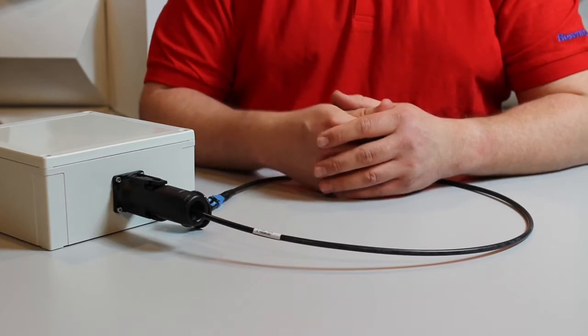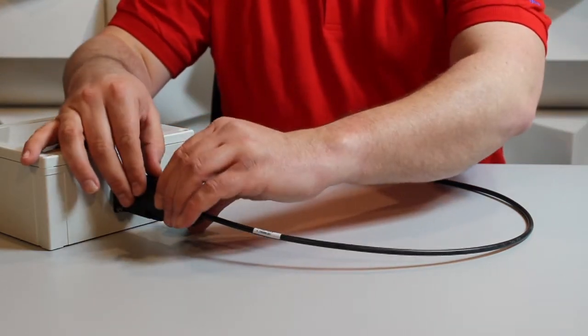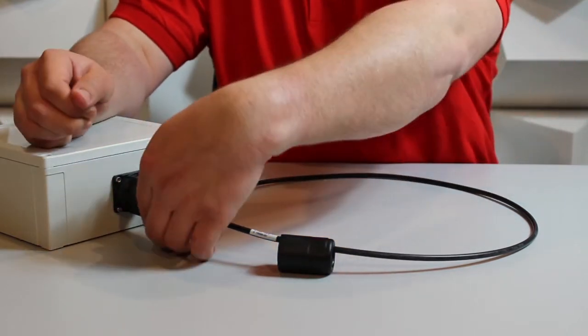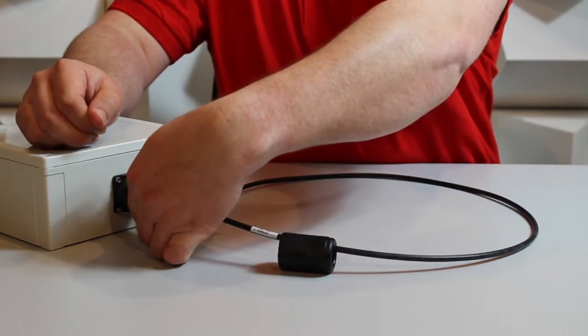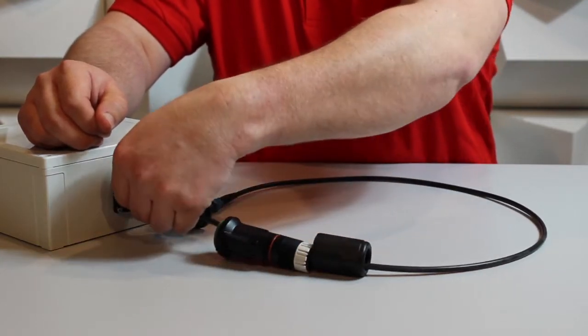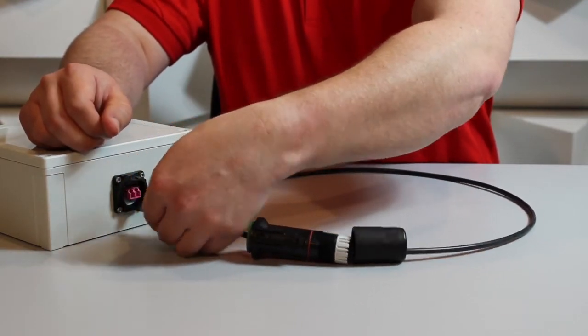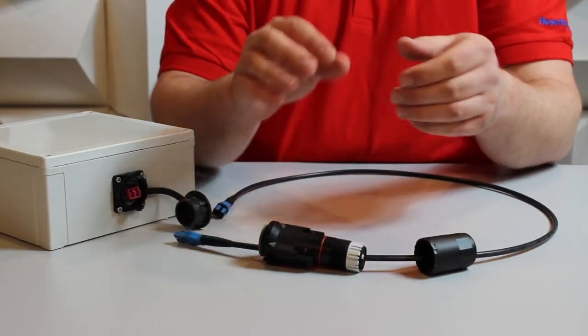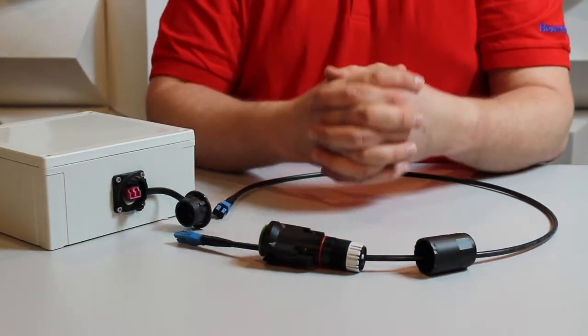So removing the Rosenberger Fiber Enclosure is also extremely straightforward. All we have to do is unscrew our back nut, press down on the latches and remove it. We also remove our cable from our device and then simply remove the slotted grommet and remove the enclosure.